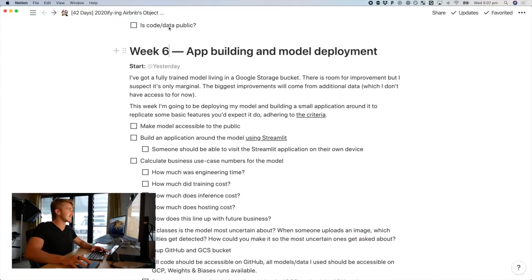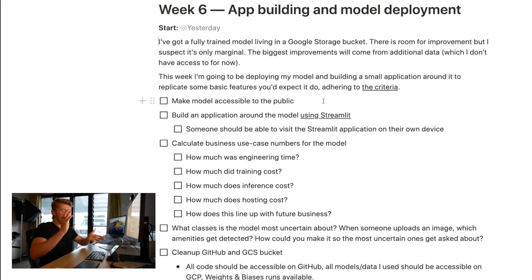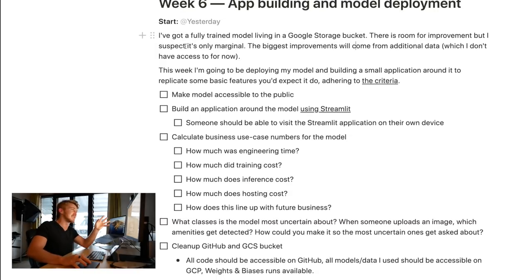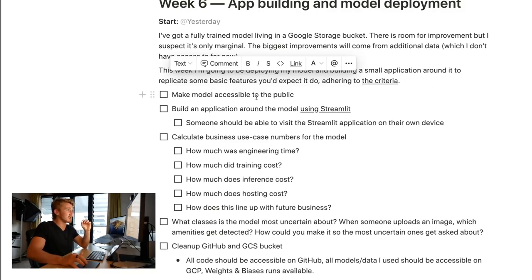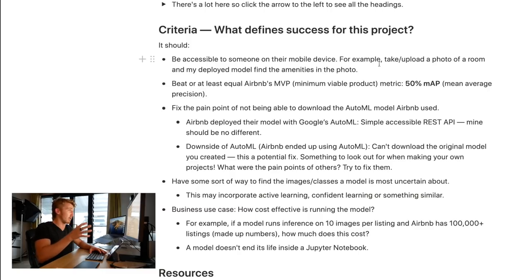Let me show you what I'm up to, or at least what I plan to get done. We're going to go basically until the model is deployed — that is our minimum viable product. It's week six; the start date was yesterday, the first of April 2020. I'm going to wrap this up around the fifth of April. I've got a fully trained model living in a Google Storage bucket. There's room for improvement but I suspect it's only marginal unless I had more data. This week I'm deploying my model and building a small application to replicate basic features — accessible to someone on their mobile device, so someone can take and upload a photo of their room and my deployed model finds the amenities in that room.